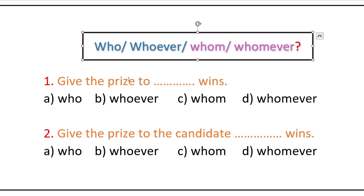The first question is: 'Give the price to ___ wins.' To correctly fill in this blank, we have to be very careful in choosing the right relative pronoun. We need to analyze the sentence first. This is an imperative sentence, so we do not have an explicit subject.